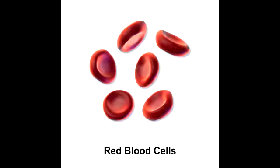What is anisocytosis? Anisocytosis is the increased production of red blood cells that vary in size. What is poikilocytosis? Poikilocytosis is the increased production of red blood cells that vary in shape.